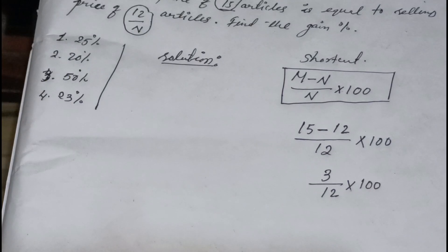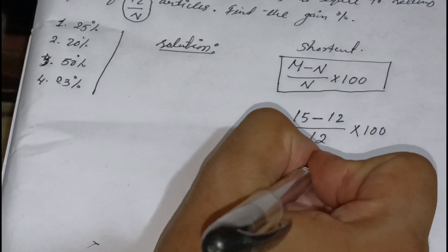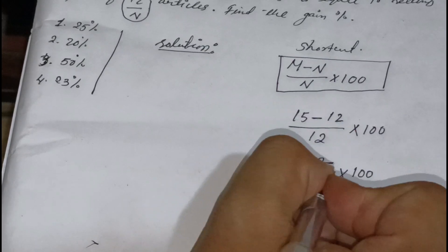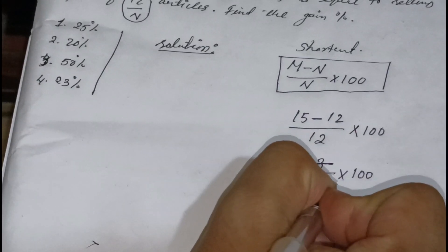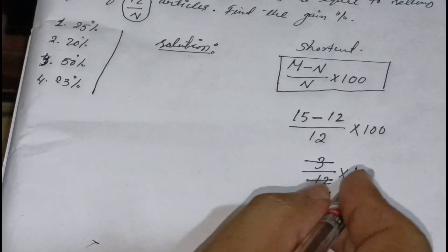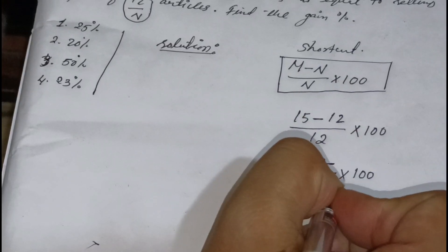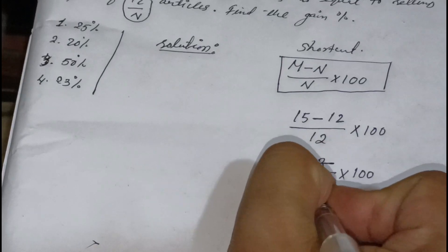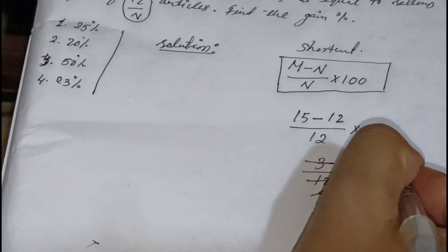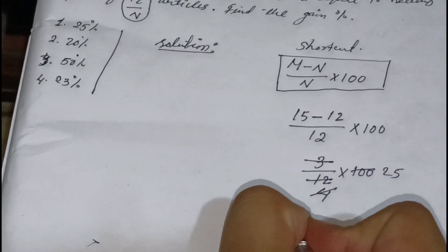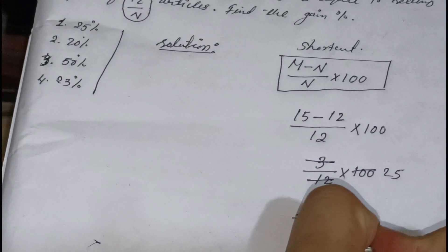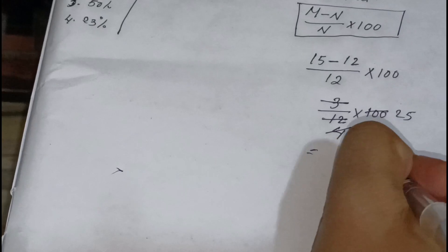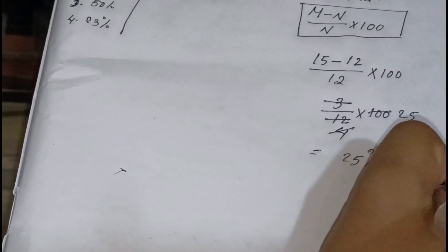So we have 3 by 12 into 100. From the table of 3: 3 fours are 12. So 4 goes into 100 how many times? 4 times 25 equals 100. Therefore our answer is 25 percent gain. Profit is 25 percent.